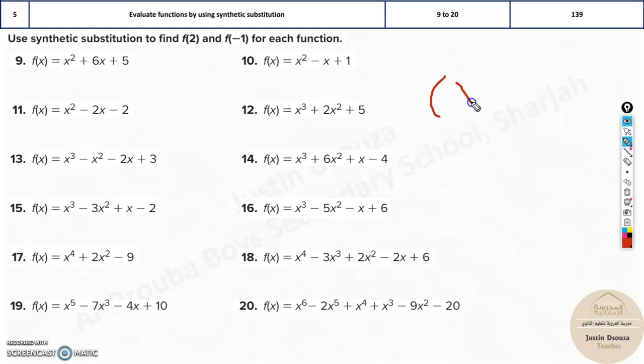Binomial is like x plus 2 or x minus 2 or something like this. You're dividing a polynomial with this, then it's possible to do synthetic substitution. Now over here, you do not need to do that for now. All you need to see is what have they given?